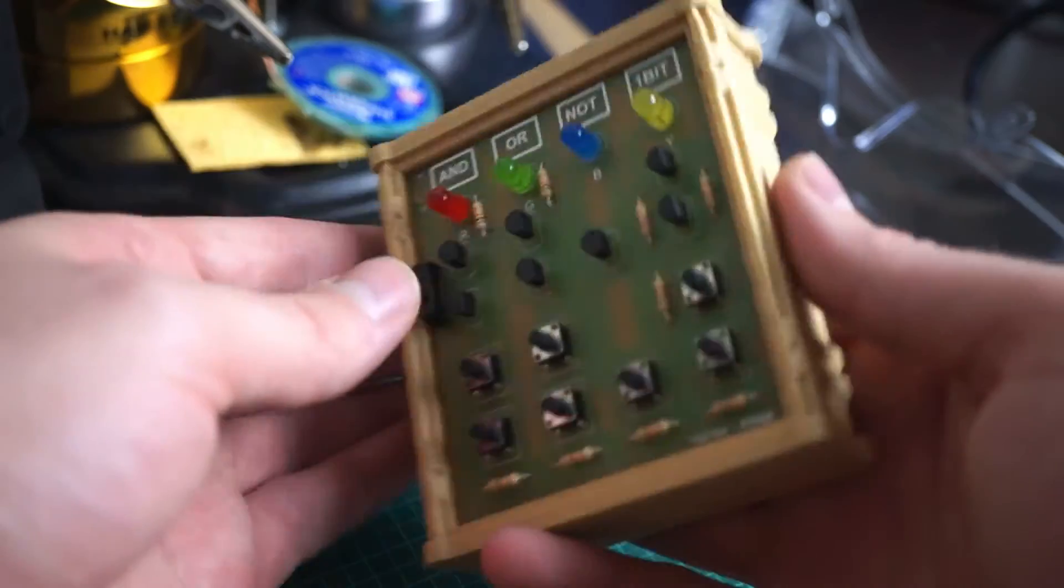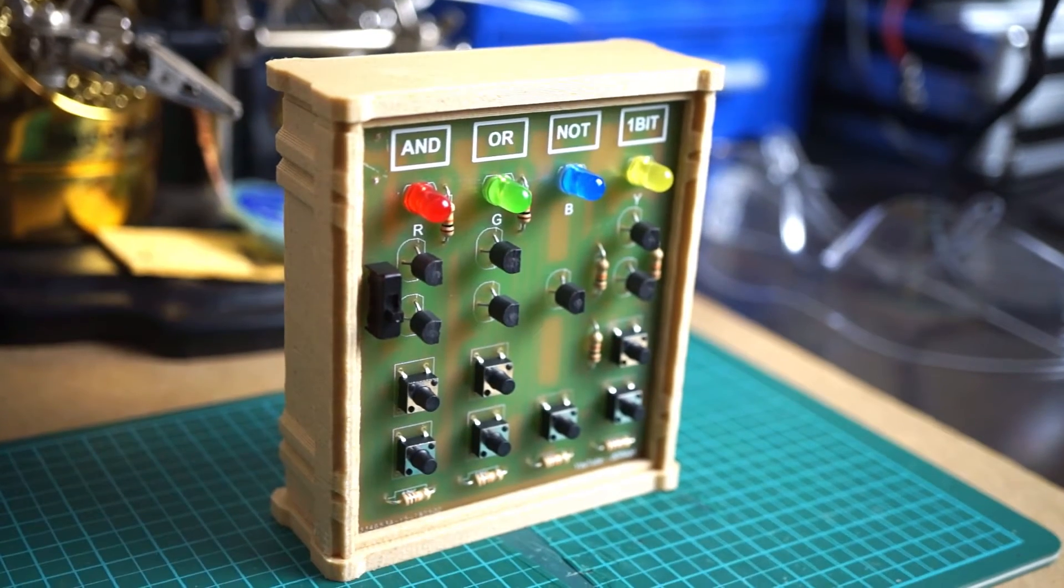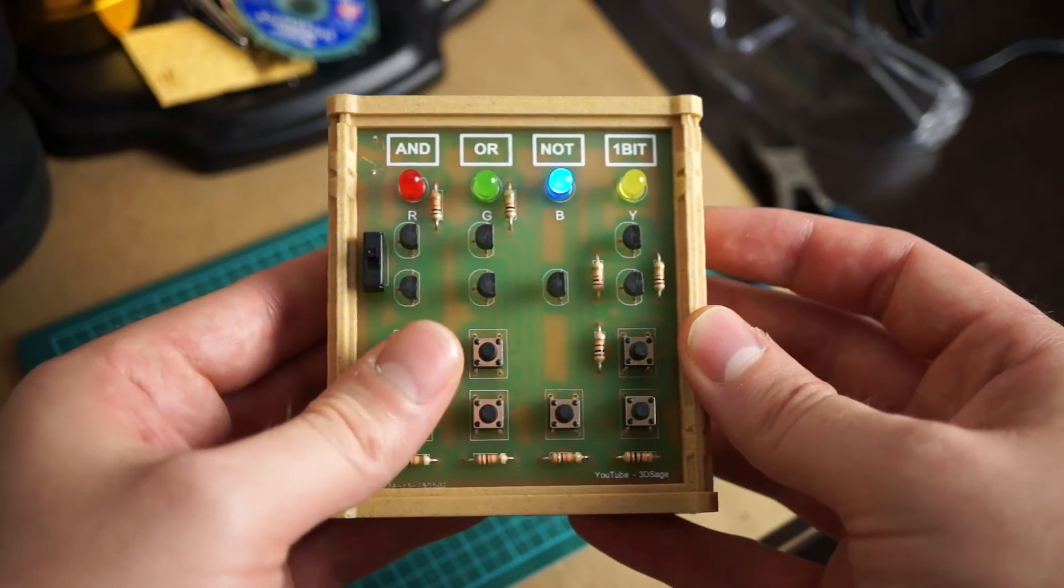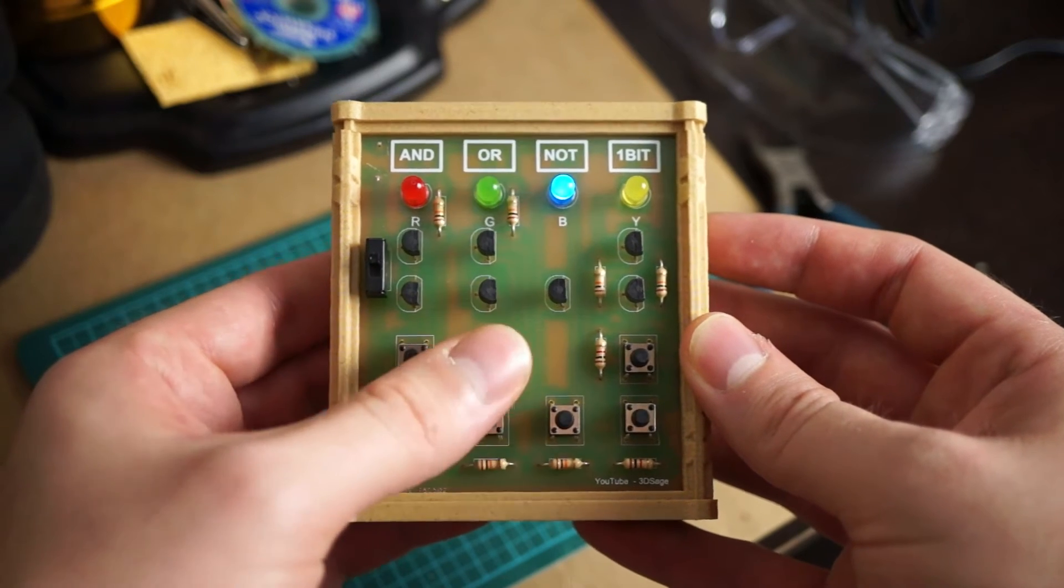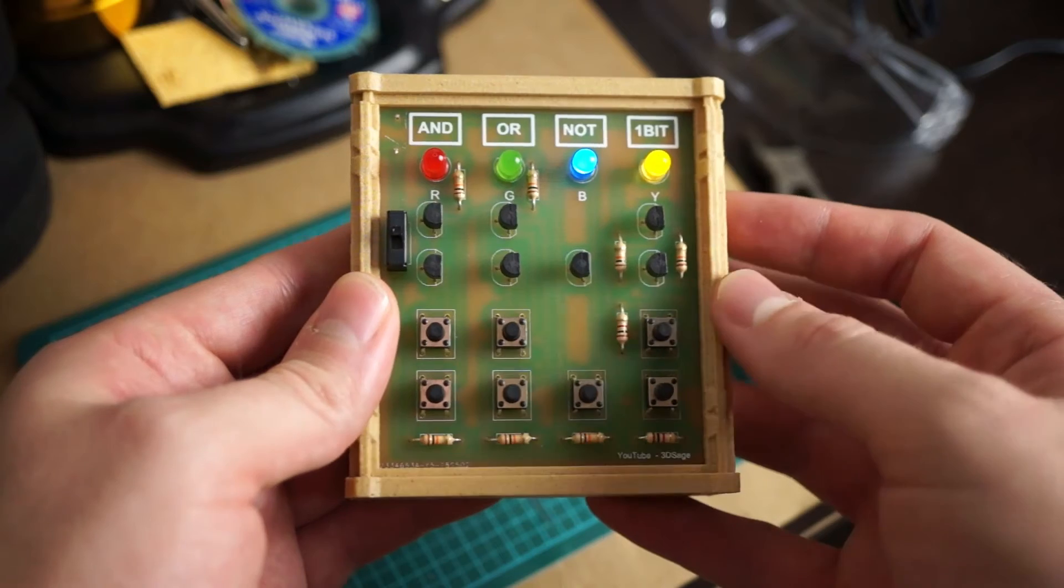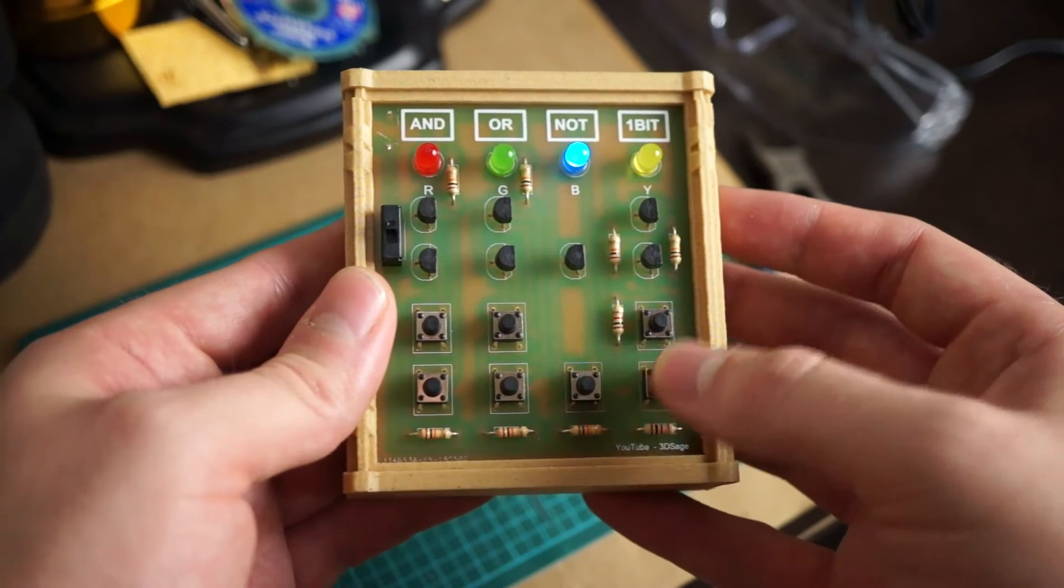As a visual learner and a maker, I'm excited to show you this device I made that clearly displays these rock stars in action. Both buttons need to be on for the AND gate, either for the OR gate. This button turns off the NOT gate, and two NOT gates make up this one bit of memory.